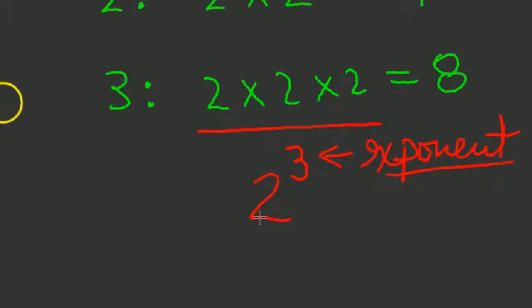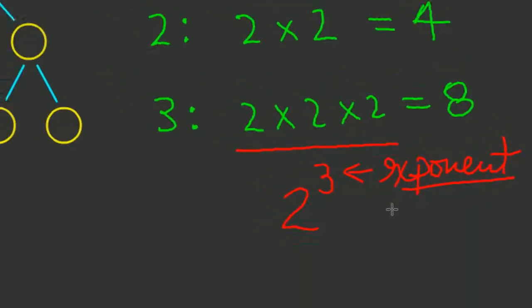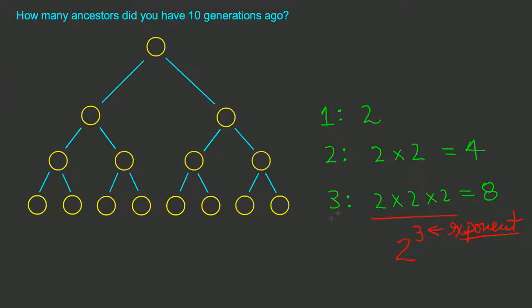And we say that to do this calculation, you perform two to the exponent three. And we can't forget that that's not two times three. That's two times two times two. In other words, two times itself three times. So in the third generation, we had to multiply two with itself three times.